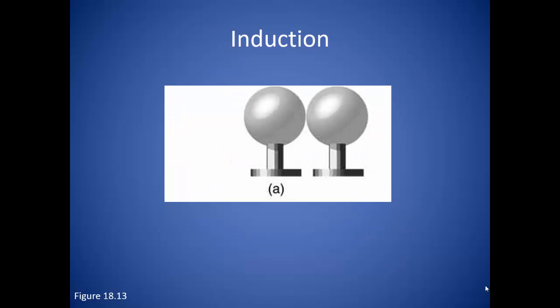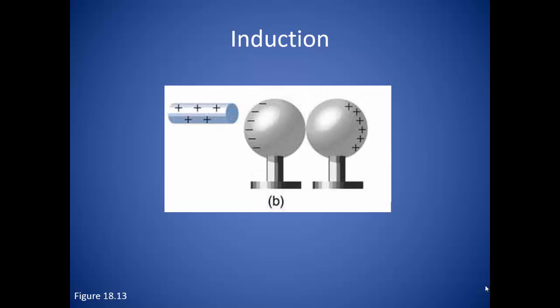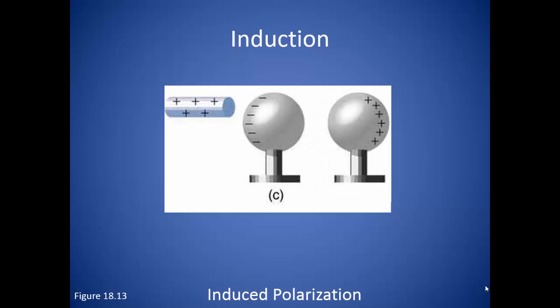One more method of charging an object is called induction. Take two neutral metal spheres that are in contact with each other. Bring a charged object close to one of them. This is actually very similar to the electroscope in that the charged object, in this case positive, will attract the negative charges to it, creating an induced polarization between the two spheres. Since the two spheres are in contact, the negative charges from the far object make the journey over as well. This leaves a lot of positive charges in one of the spheres, and a lot of negative charges in the other sphere. If the two spheres are then separated, it leaves one positively charged and one negatively charged.